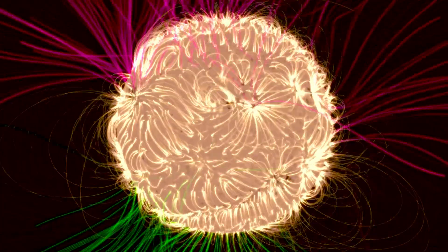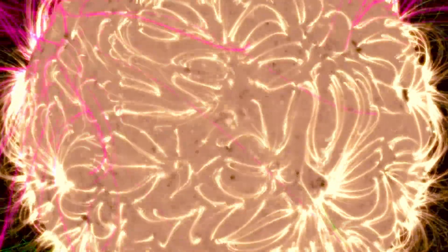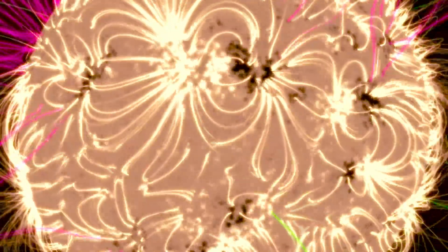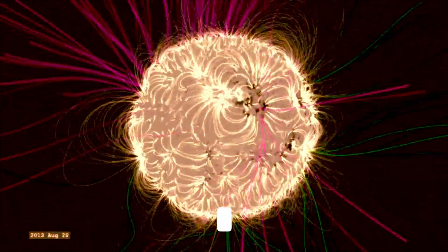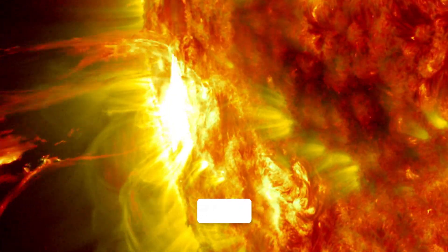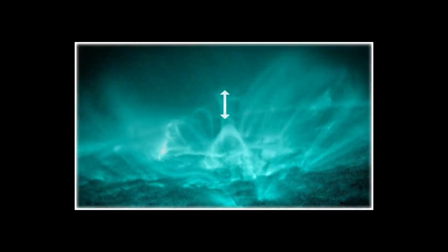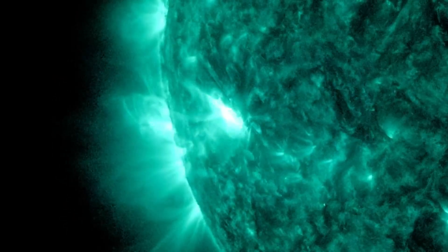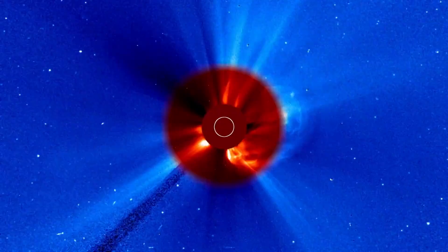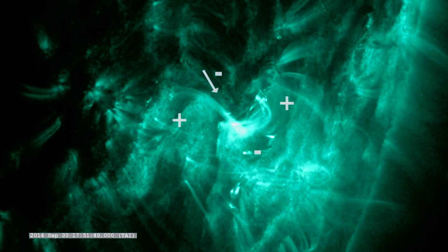When the magnetic field around sunspots becomes too tangled or unstable, it can suddenly snap, releasing a huge burst of energy in the form of a solar flare. This process is similar to a rubber band being twisted until it finally breaks and releases all of its stored energy at once. Solar flares are classified by their intensity, with the most powerful ones being X-class flares. These are incredibly energetic and can release as much energy as billions of atomic bombs.